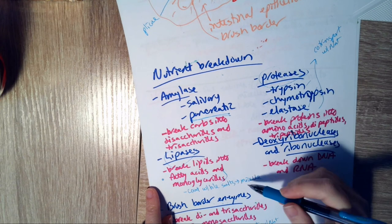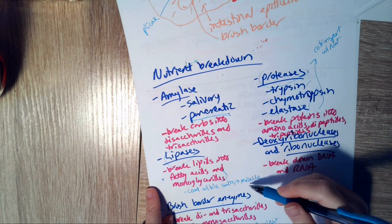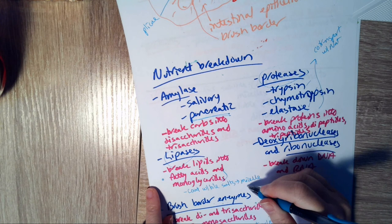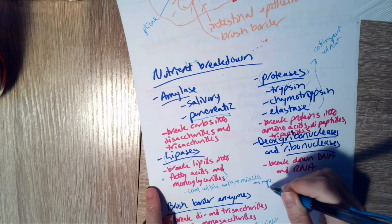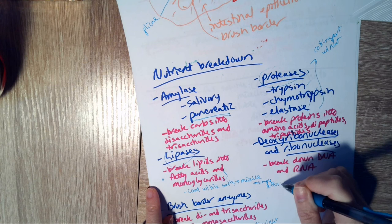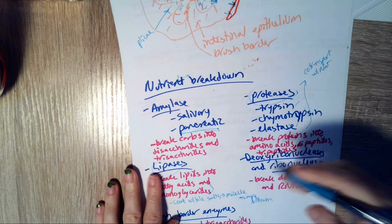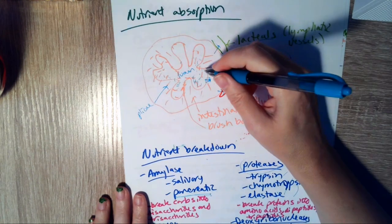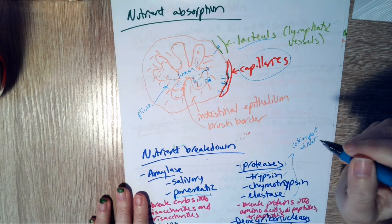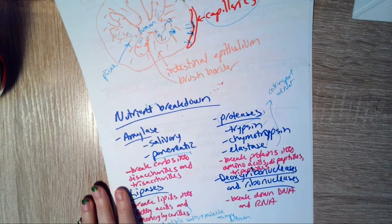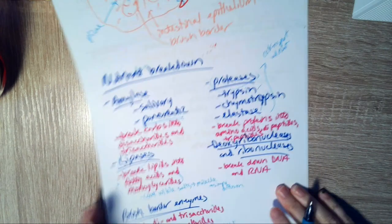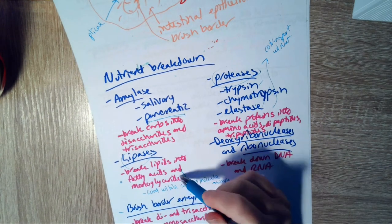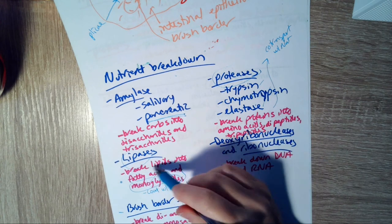So the micelle is going to just do simple diffusion into the cell. And once it's in the cell, so we've got the micelle just kind of moving on into the cell. And once it's inside of the intestinal epithelial cell, then it's going to have to go through another conversion. We're going to take some monoglycerides and fatty acids and link them back together to make triglycerides.